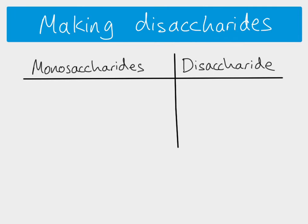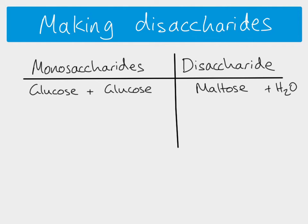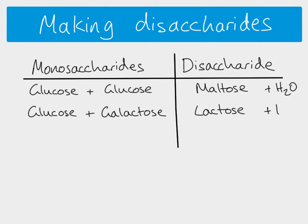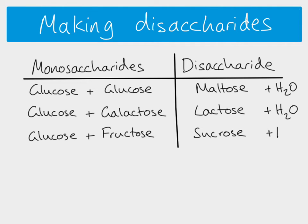Making disaccharides: if we have a glucose molecule and bond it to another glucose molecule, we make the disaccharide maltose, and we also make a water molecule. Glucose plus galactose — another monosaccharide — makes lactose, again releasing water. And if glucose is reacted with fructose, you make the disaccharide sucrose plus water. These are the combinations of monosaccharides into disaccharides you need to know. This kind of reaction is called a condensation reaction because water is released each time.